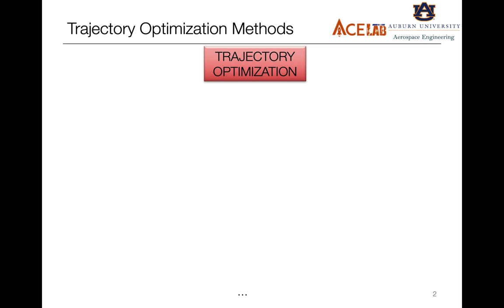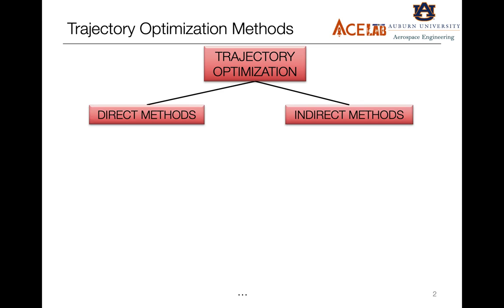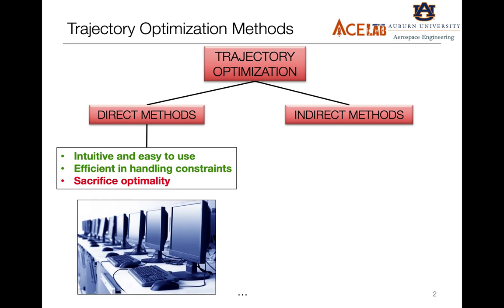While solving trajectory optimization problems, the research community resorts to two different methods: direct methods and indirect methods. Direct methods are more popular because they are intuitive and easy to use. Basically, we transcribe the original problem into a non-linear programming problem and we solve for the states and the controls directly. While the problems have constraints of different kinds, these are much more efficient to handle such kinds of constraints.